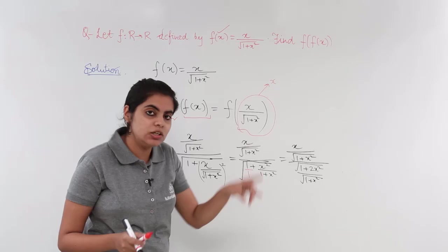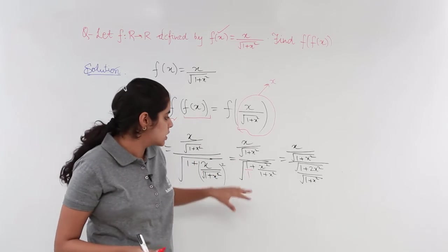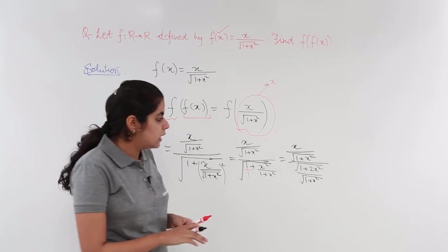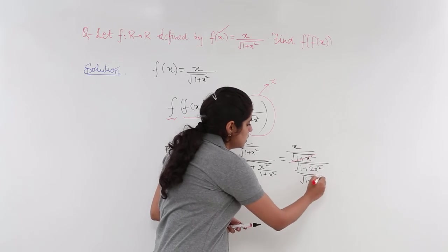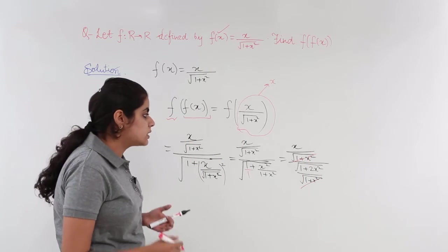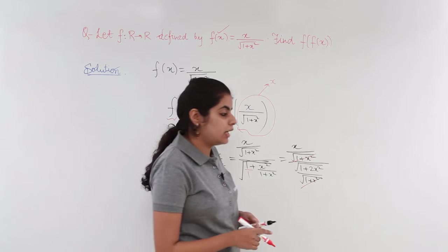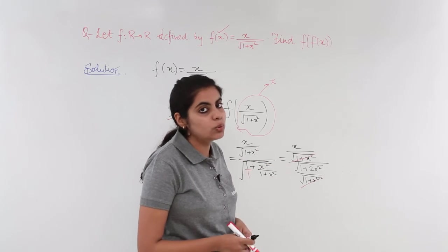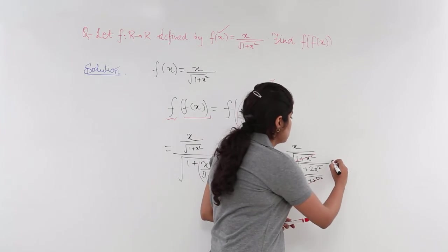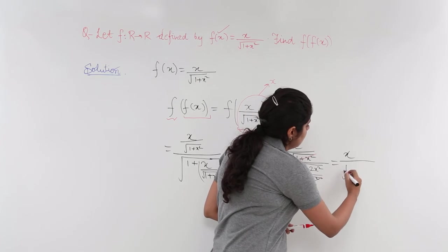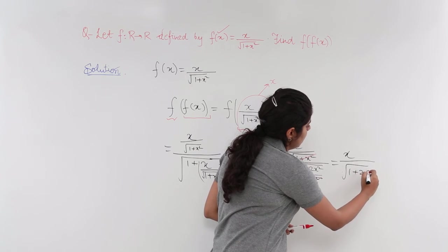What I did was there was one single root. I did split into 2 roots. So, it becomes 2 roots. Now, you can see some things get cancelled. These things get cancelled. So, what is the final answer? The final answer that we are left with is x upon under root 1 plus 2x square. So, the answer is x upon under root 1 plus 2x square.